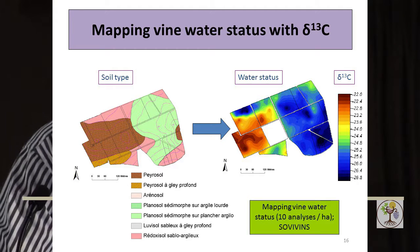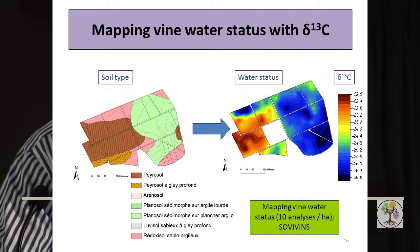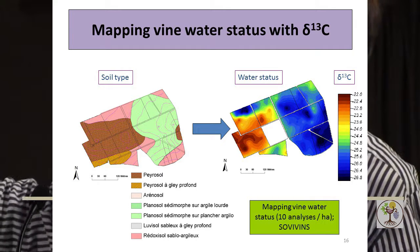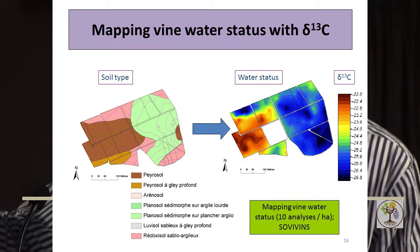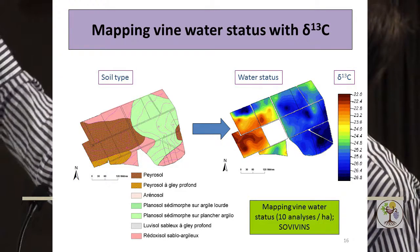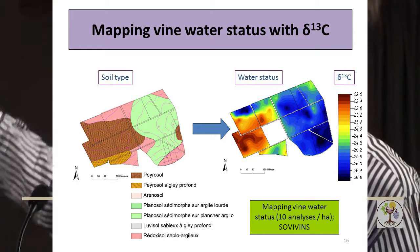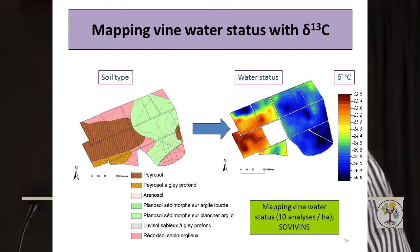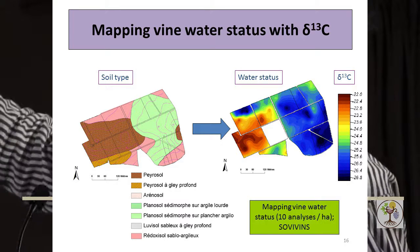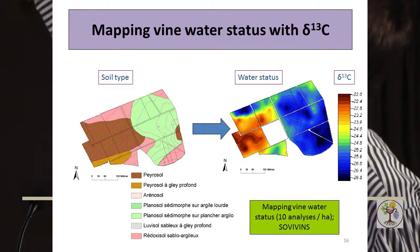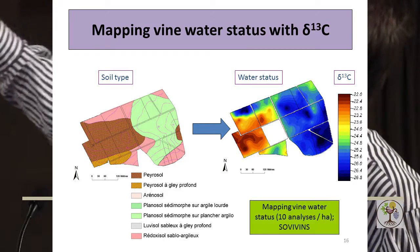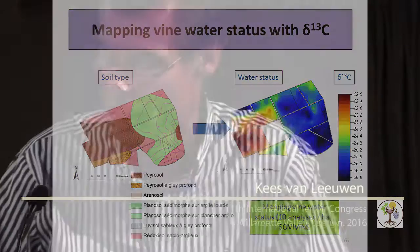Here is an example from part of the vineyard of Château Cheval Blanc in Saint-Émilion. We first made a map of electric resistivity, then a very precise soil map, and then a map of the water status of the vines with this 13C method with a quite narrow sampling grid — 10 measurements per hectare. We get very nice patterns of water deficit, and this concords very well with the gravelly soils on the estate. I think it's today the only technique which allows mapping vine water status at such a fine scale.